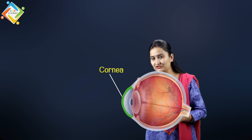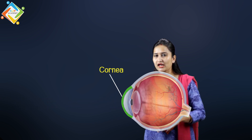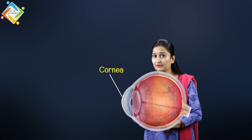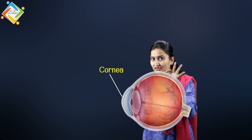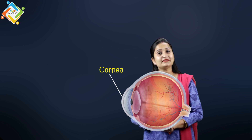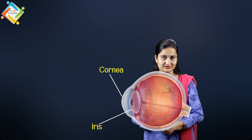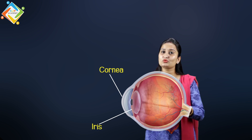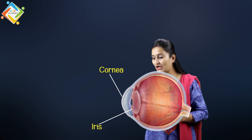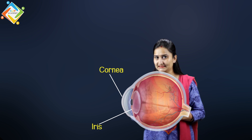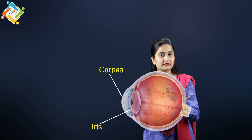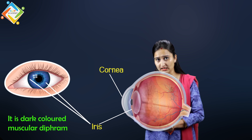If you look at the cornea, you will see a circular structure that is called the iris. The iris that you are seeing here is basically a dark-colored muscular diaphragm.